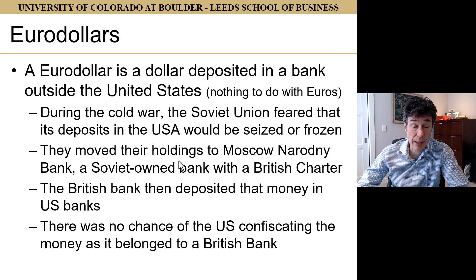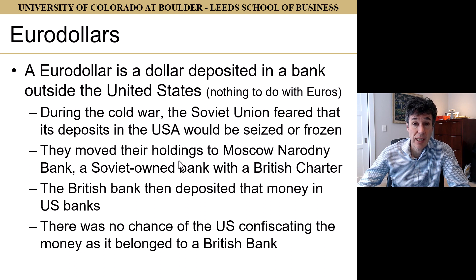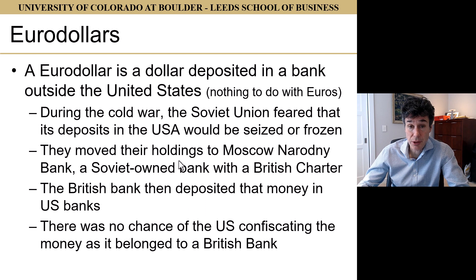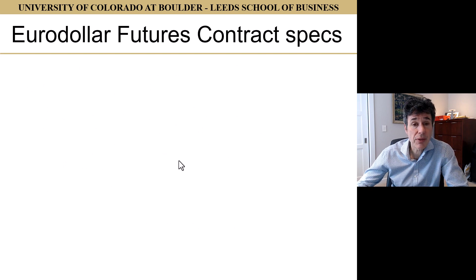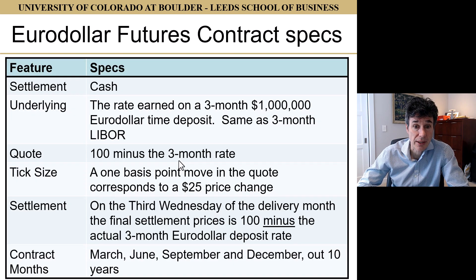This is now a really big market. Basically, any time someone has a dollar deposit which is not based in the United States, that's called a Eurodollar — so it doesn't have anything to do with Euros, nor does it really have anything to do with Europe anymore. Now, the futures contract on Eurodollars has an underlying asset that is the rate earned on a three-month, $1 million Eurodollar time deposit.